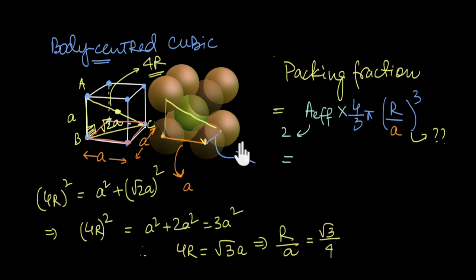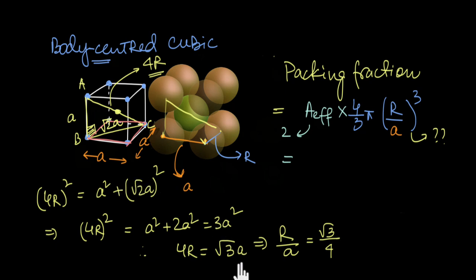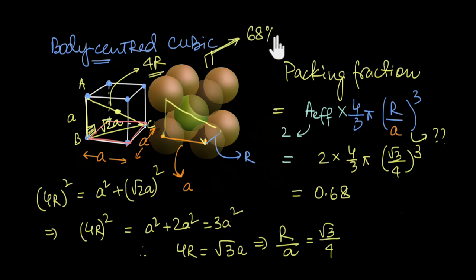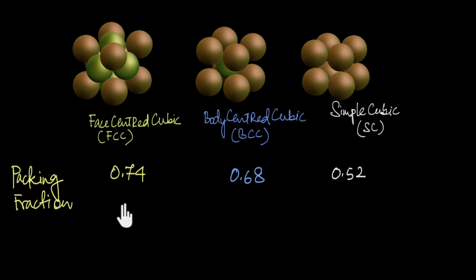As long as atoms are arranged in BCC, they touch across the body diagonal, so the body diagonal is always 4r = √3·a, giving r/a = √3/4. Plugging into the packing fraction formula gives 0.68, so BCC has 68% packing efficiency. To summarize: FCC has the highest packing efficiency at 0.74, BCC is 0.68, and simple cubic is 0.52 — making FCC the most efficient of all cubic unit cells.